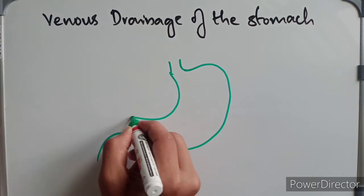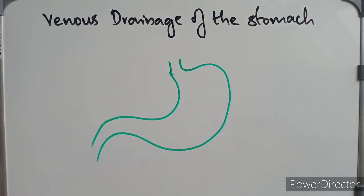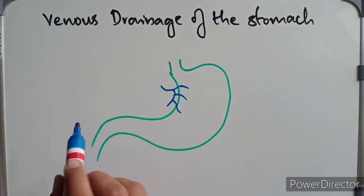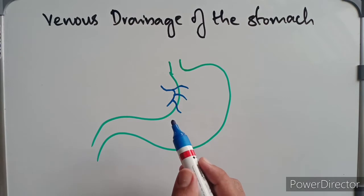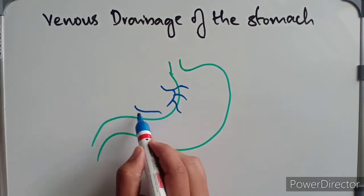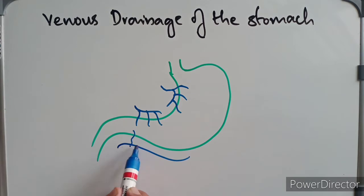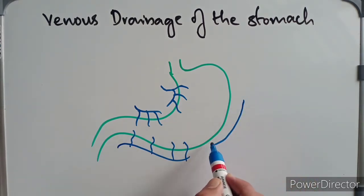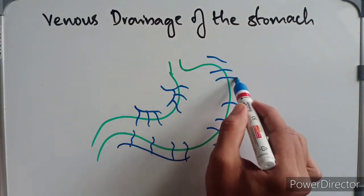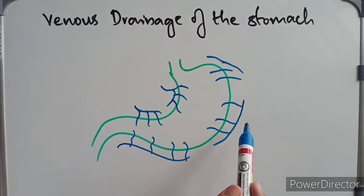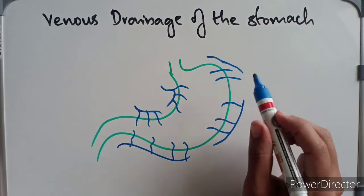Drawing the stomach to show venous drainage: this is the left gastric vein and the right gastric vein. The right gastroepiploic vein drains the same region supplied by the right gastroepiploic artery. The left gastroepiploic vein and the short gastric veins are also shown. The short gastric veins and left gastroepiploic vein drain into the splenic vein, as they were supplied by the splenic artery.